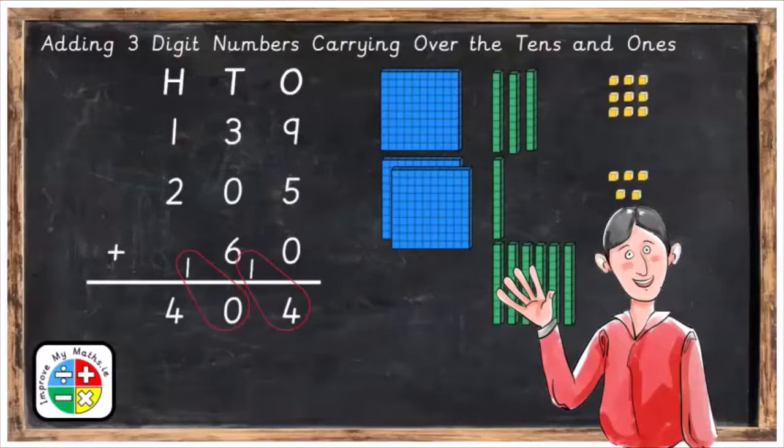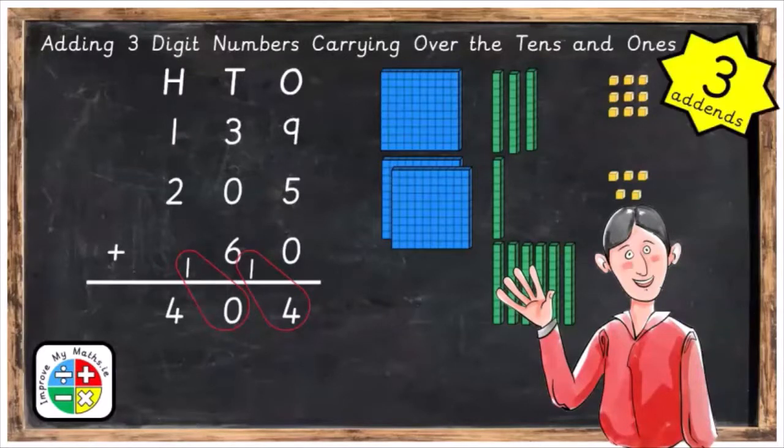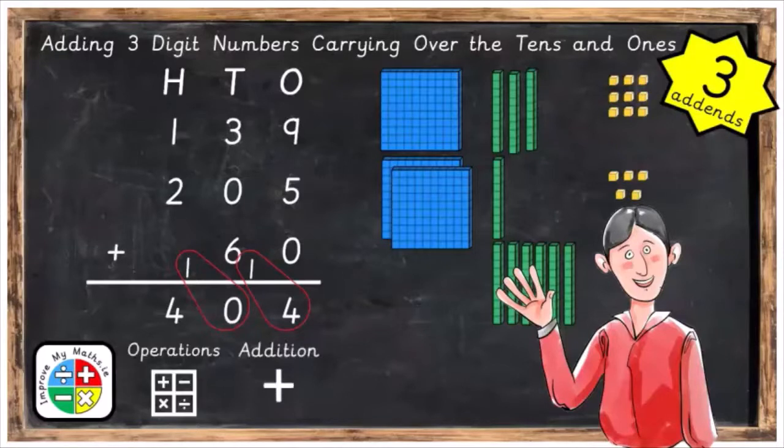Hi everyone, in this lesson we're going to be adding three digit numbers, carrying over the tens and ones, but in three addends, three rows. This topic is part of the operations and addition area of maths, and it's suitable for children who are eight years and older.